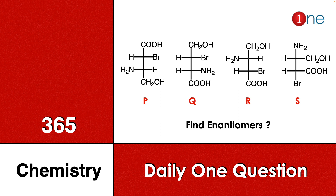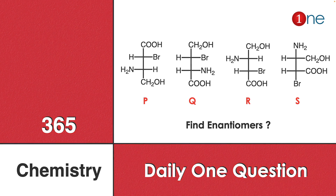If you look at P, bromine and amine are anti to each other. In Q, they are syn to each other. Some are opposite to each other but in a mirror image arrangement, with amine and bromine at top and bottom. You have to find among the four which one is the enantiomer of the given structure.